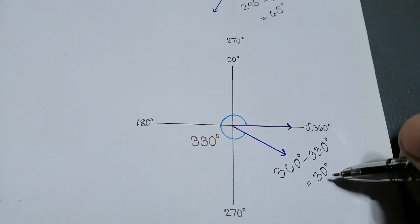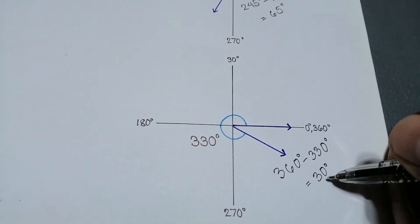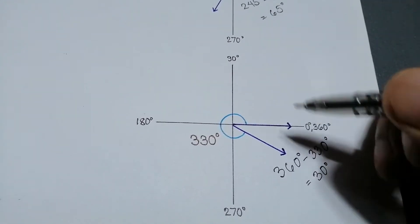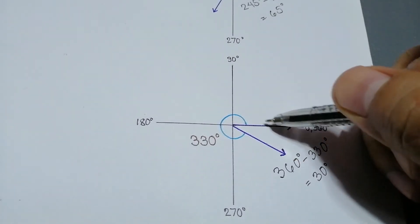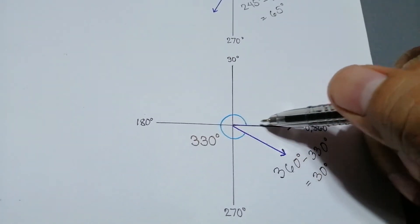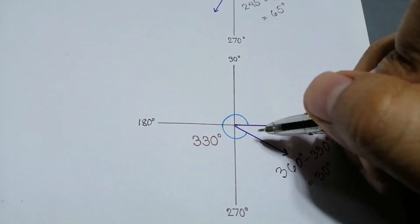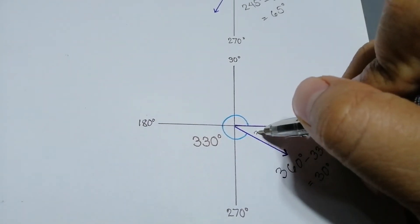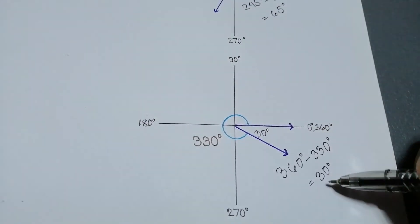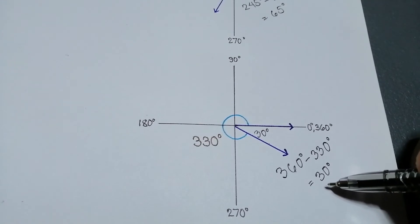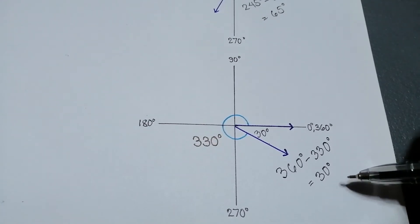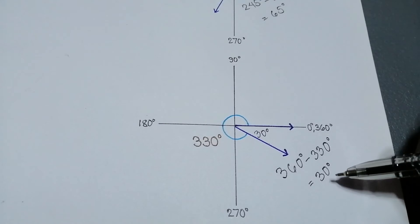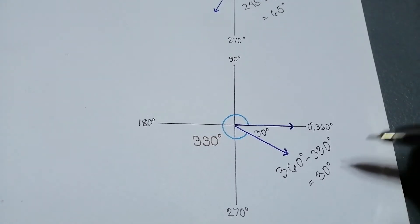This is the measurement of the acute angle formed by our terminal side and our initial side, which is on the positive x-axis. Therefore, the reference angle of 330 degrees is equal to 30 degrees, which is at the fourth quadrant.